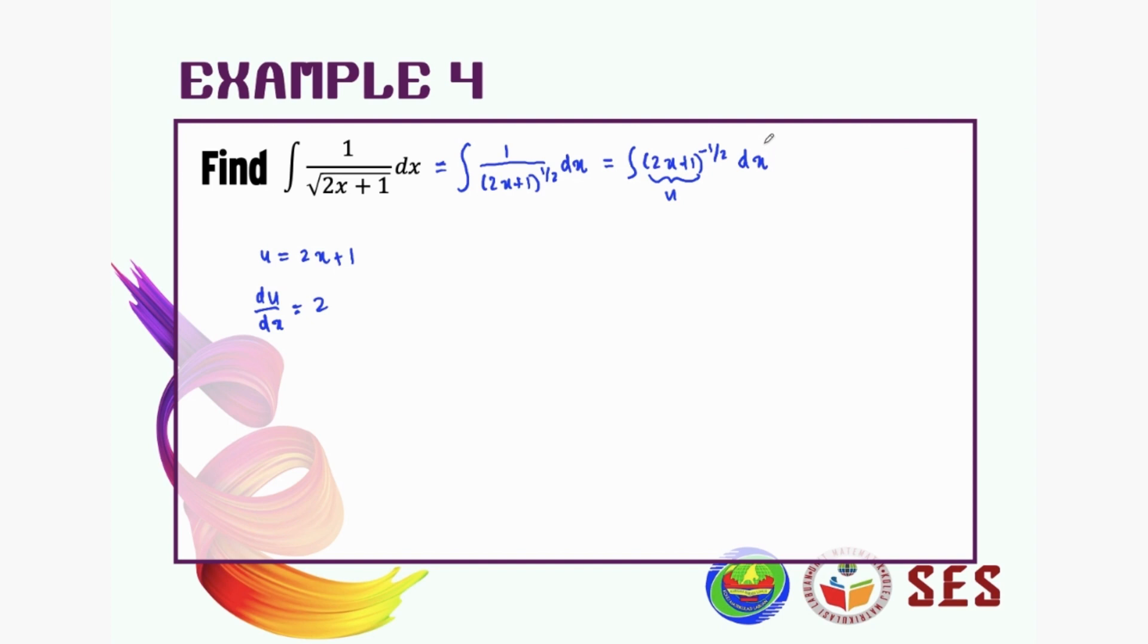So what's left is dx only, right? So we bring the x to the other side, we're gonna get du equal to 2 dx. But we only need dx.